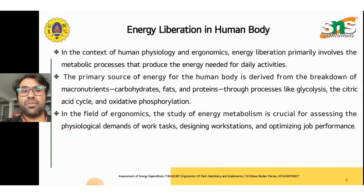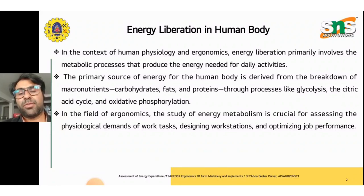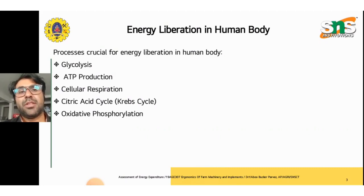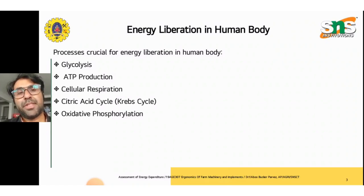In the field of ergonomics, the study of energy metabolism is crucial for assessing the physiological demands of work tasks, designing workstations, and optimizing job performance. The key processes crucial for energy liberation in the human body are glycolysis, ATP production, cellular respiration, the citric acid cycle (also known as the Krebs cycle), and oxidative phosphorylation.